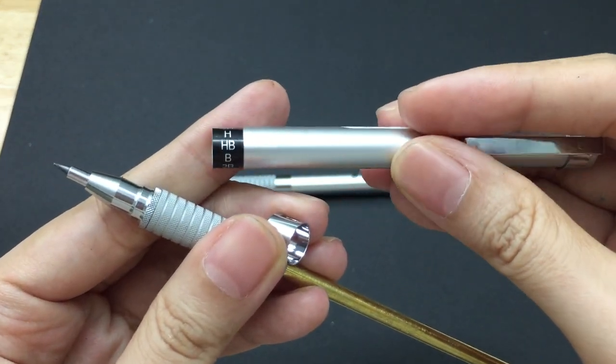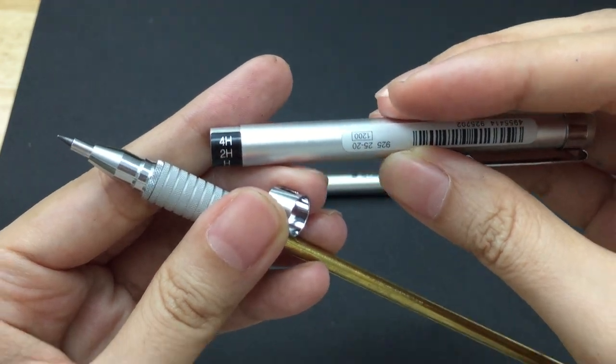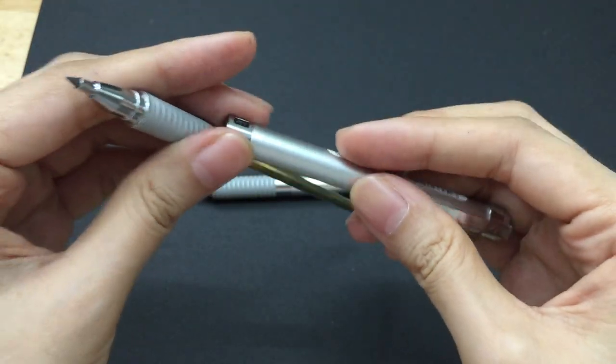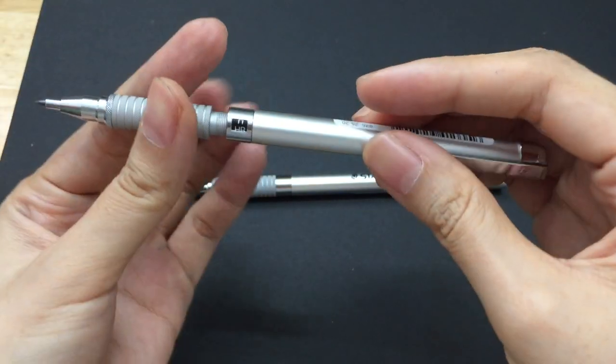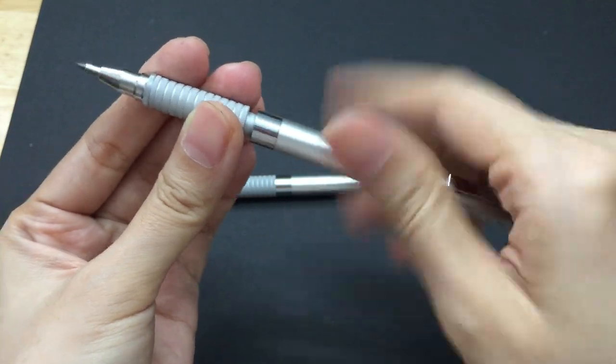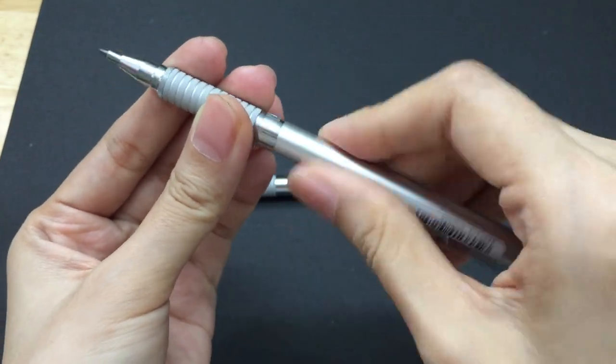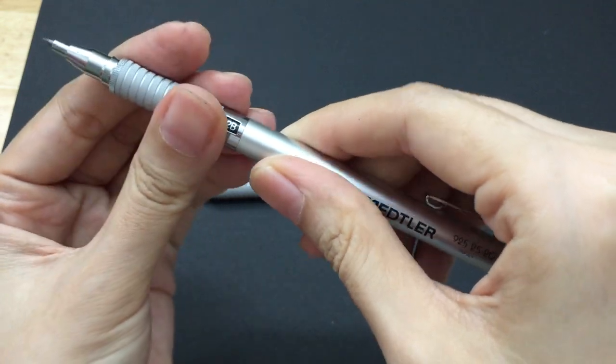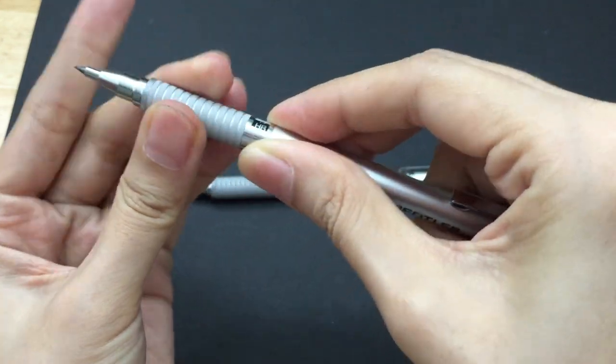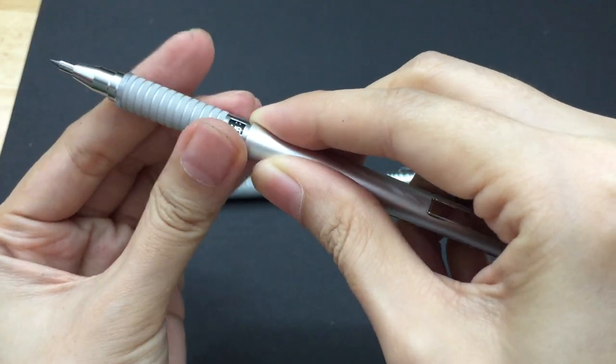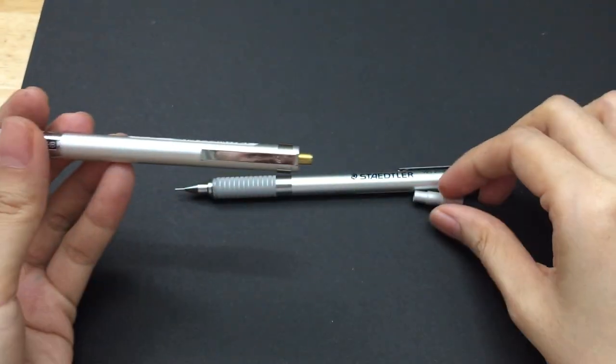This one comes from 4B back down to 4H. Nice. Good boy HB. It comes with HB when you buy it.